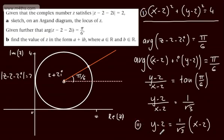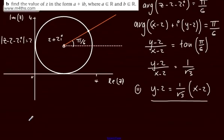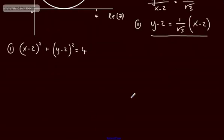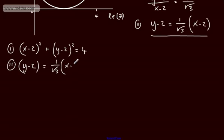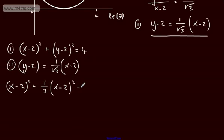So what we've got now is equation 1 and equation 2. Equation 1: x minus 2 all squared plus y minus 2 all squared is equal to 4. Equation 2: y minus 2 is equal to 1 over root 3 times x minus 2. All I'm going to do is substitute in. If y minus 2 equals 1 over root 3 times x minus 2, I sub it in: x minus 2 all squared plus — squaring that term — 1 over 3 times x minus 2 all squared is equal to 4.